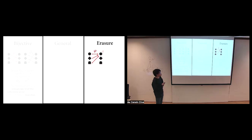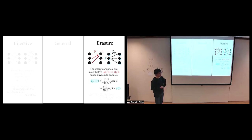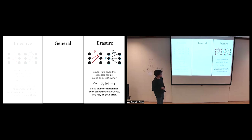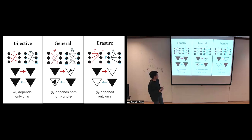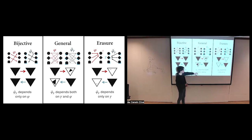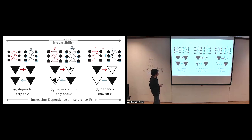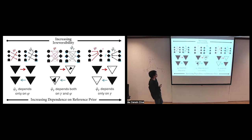For the erasure channel, what is the reverse process given by Bayes' rule? Interestingly, what you get is that the reverse of an erasure channel is another erasure channel - and it erases to the reference prior. This makes a lot of sense: Bayes' rule says all the information is gone, so just go with your best guess, just rely on your prior. In the middle cases, the reverse process depends on both gamma and the forward process. If your reference prior is a pure state, you essentially get that state back - you're accepting nothing but that particular state. Notice the relationship: as the simplex gets smaller, dependence on the reference prior increases from none to maximal.